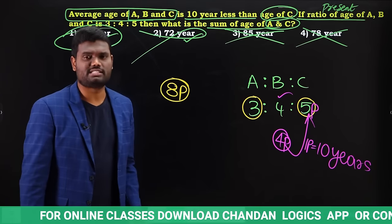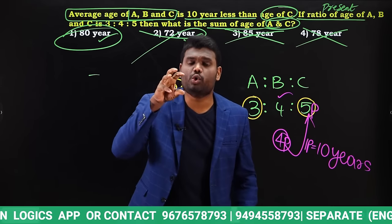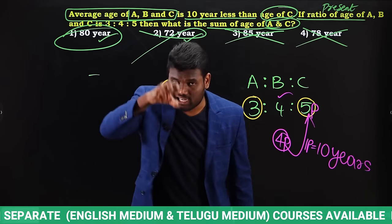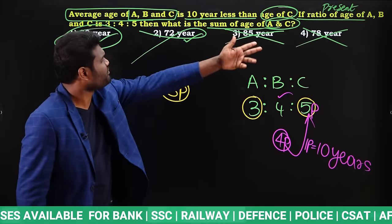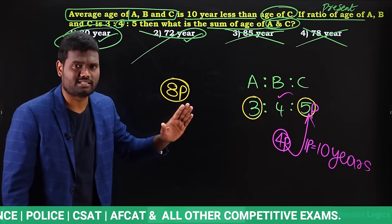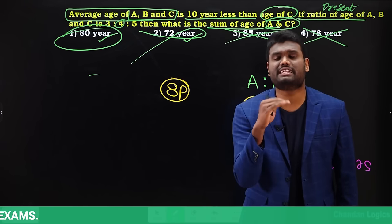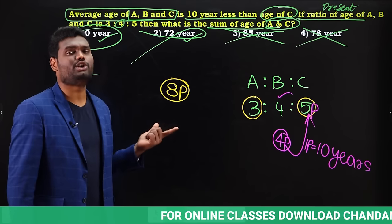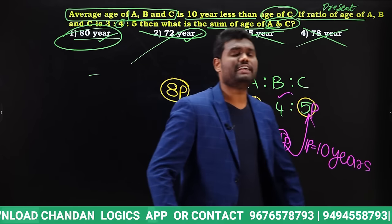Everything needed is given in the question — you just need to understand and collect the key points. In a fraction of seconds: average of 3, 4, 5 is the middle term 4; C is 5 parts; difference is 1 part = 10 years; A+C = 8 parts = 80 years. Always be smart and unique to save time in examination.